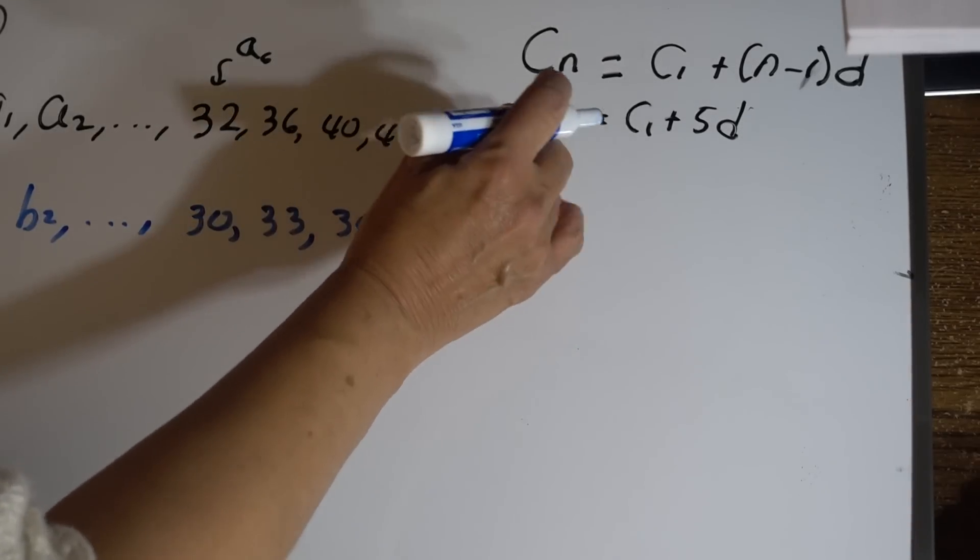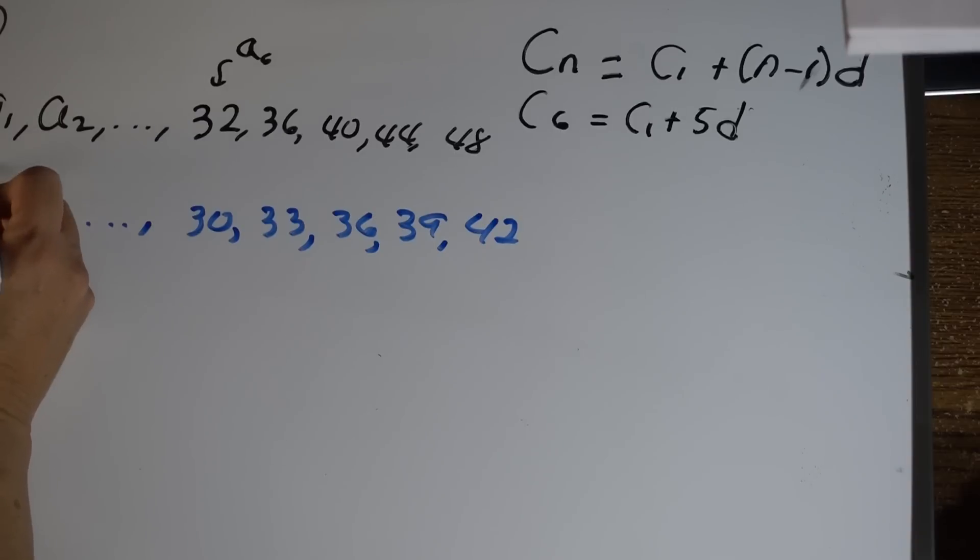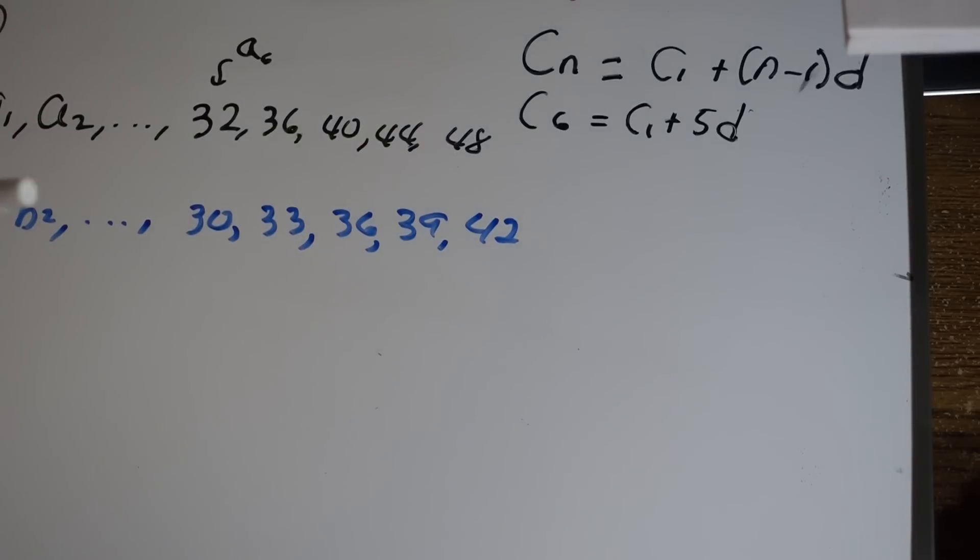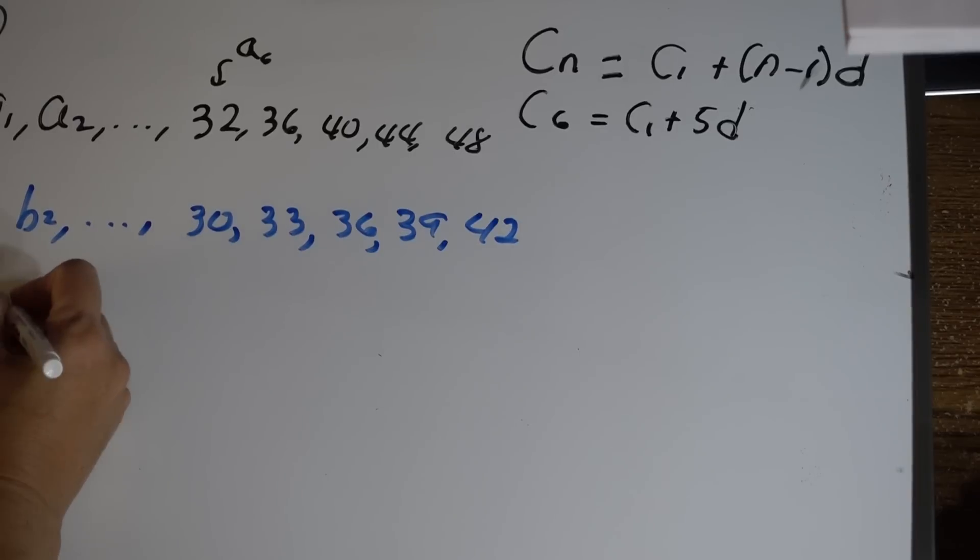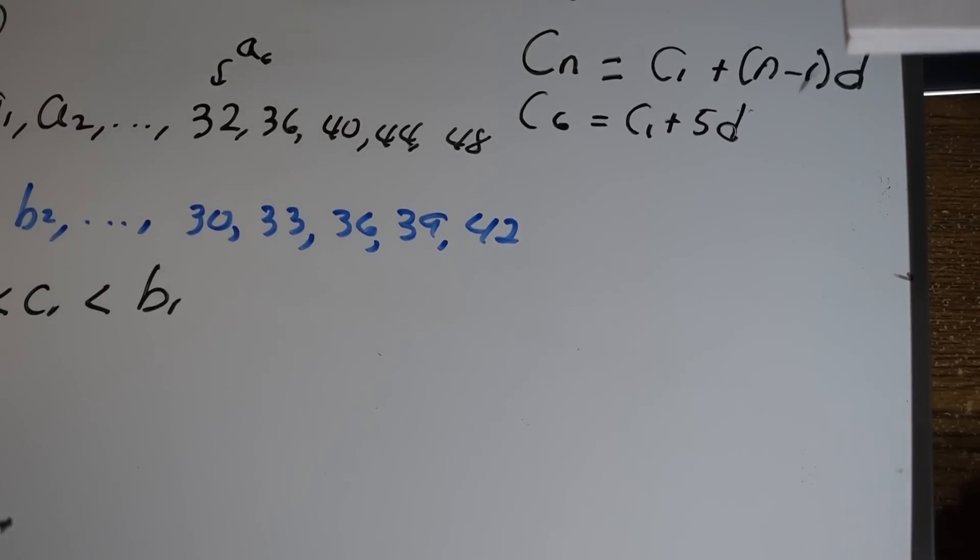These are the ones that are given. We're looking for c but we know c is right here in the middle. We know that a_1 is less than c_1 and it's less than b_1. How much is a_1 and b_1? That's going to help me because if I know how much is this one and how much is this one, I can find out the possibility of what values c can be.